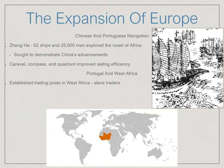Then the Portuguese showed up and started trading in West Africa. Their goal was to reach the Indian Ocean. The Ottoman Turks had closed land trade routes to Asia, so the Portuguese wanted to go south, follow Africa around, and reach the Indian Ocean that way.